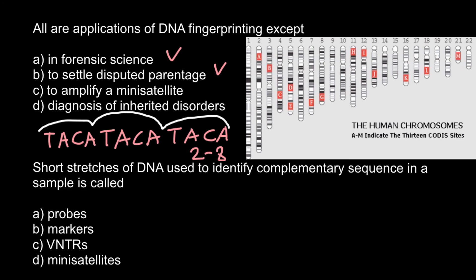Answer C is to amplify a mini-satellite. We also call such tandem repeats mini-satellites — these fragments that contain different numbers of repeats of the core sequence. So this is also a correct answer.